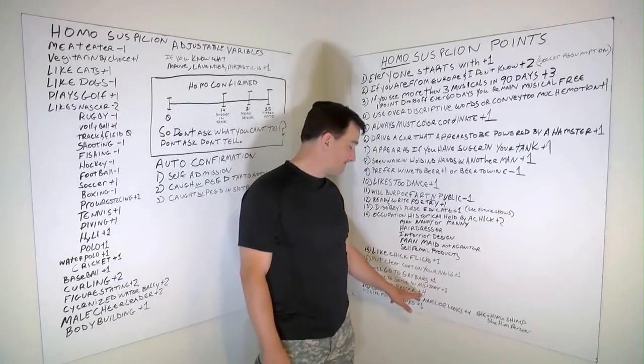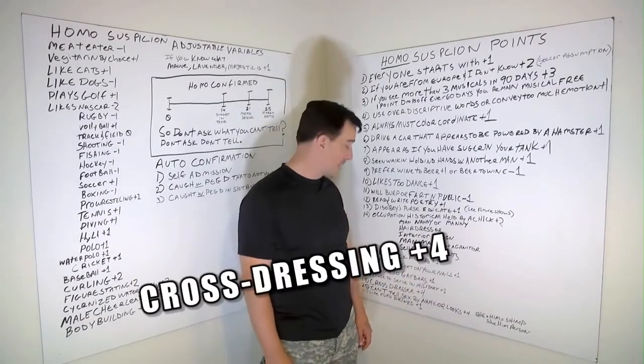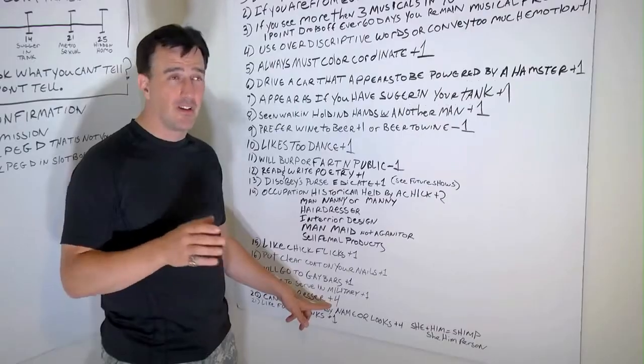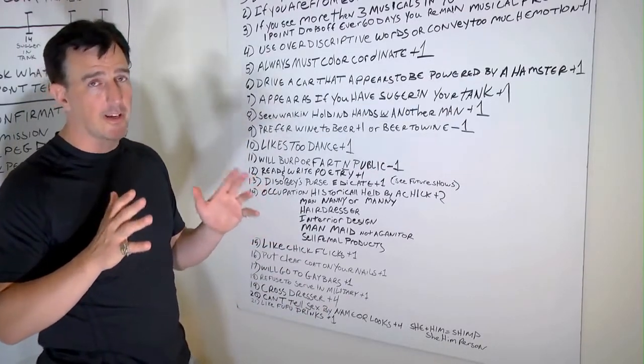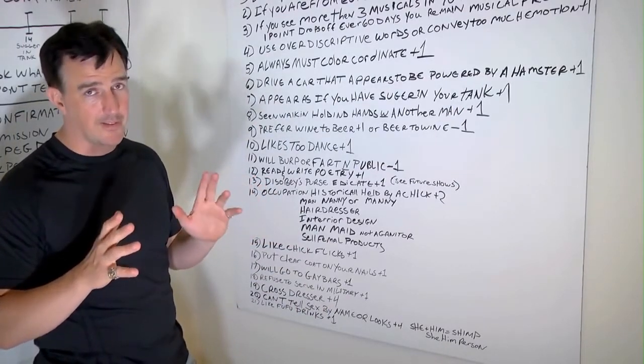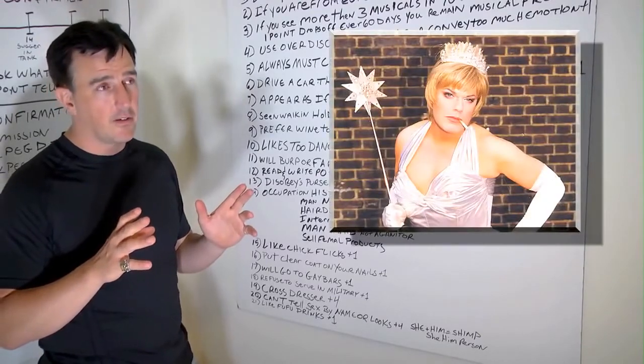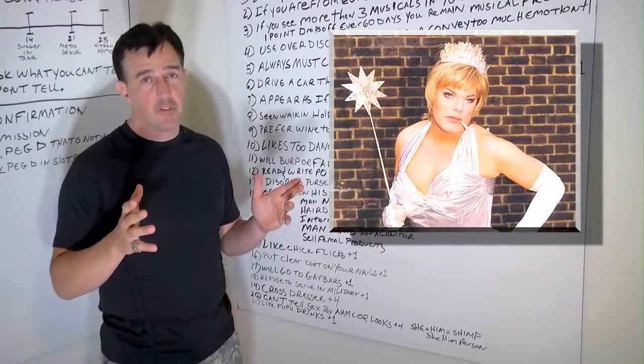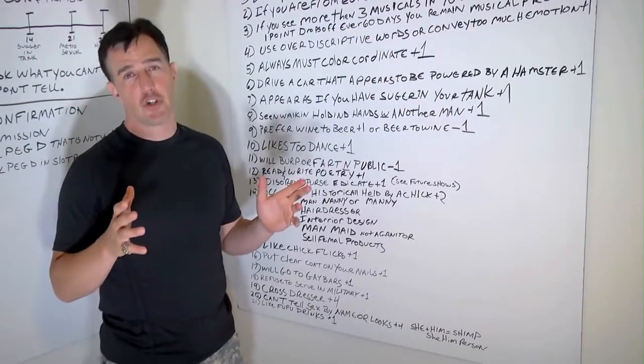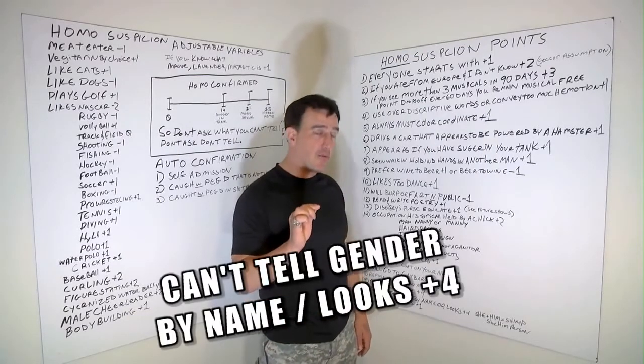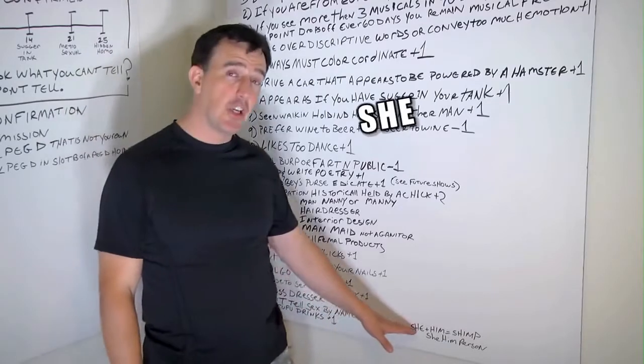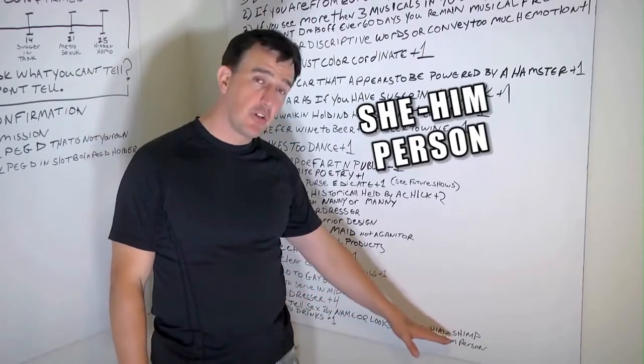If you refuse to serve in the military, even if you're like drafted or something, you're going to get a point. Cross dresser. If you engage in that type of behavior, that's plus four. And you get like a time frame around Halloween where you're not going to get penalized. You can say it's a costume or whatever. We'll pretty much believe you. But if it's like March, if you can't tell a person's sex by their name or the way they look, you become like a she, him, person, or shin. Oh my god, you can feel the heat.